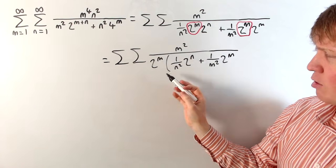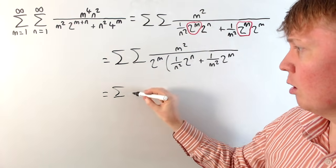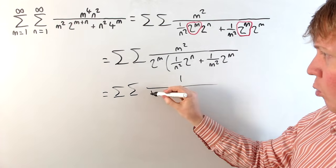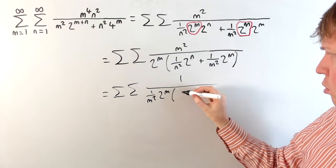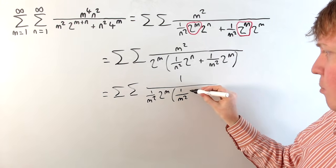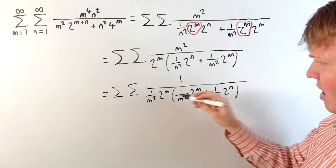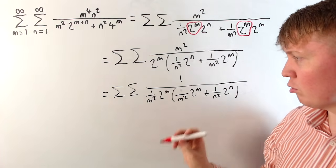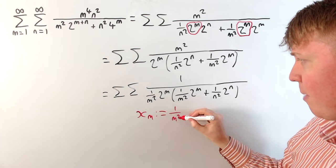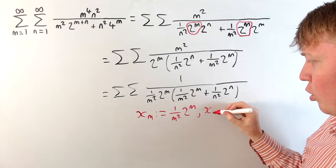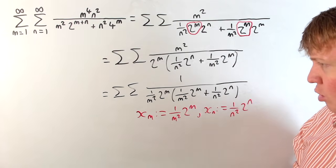We've actually got something similar on the outside as well. If we divide through by m squared on the top and bottom, we'd get 1 over m squared times 2 to the m, and then in this bracket, writing in alphabetical order, we've got 1 over m squared times 2 to the m, plus 1 over n squared times 2 to the n. There's some nice symmetry here. To make this easier to work with, we'll introduce a shorthand: xm will denote 1 over m squared times 2 to the m, and similarly xn is the same with n in place of m.